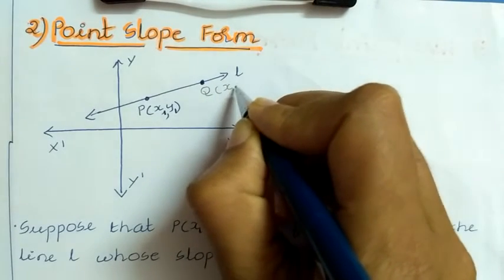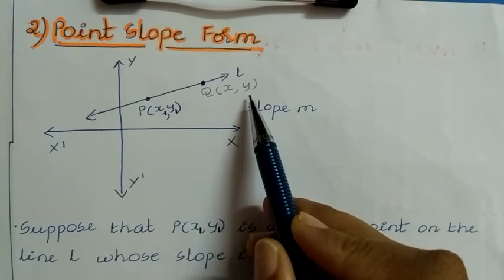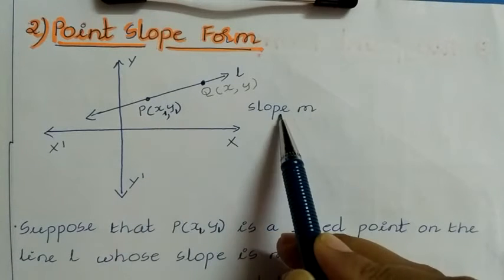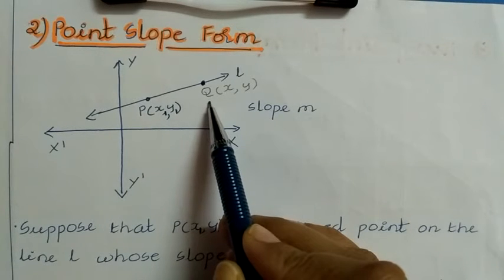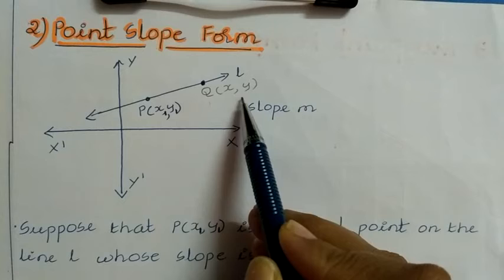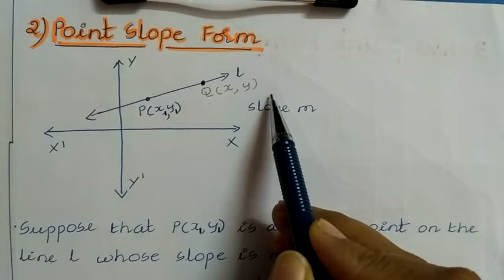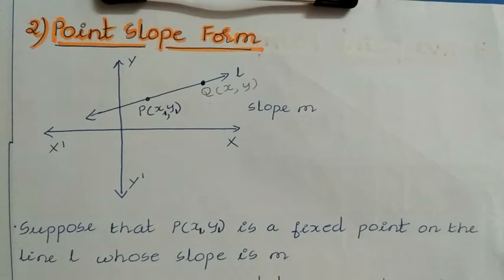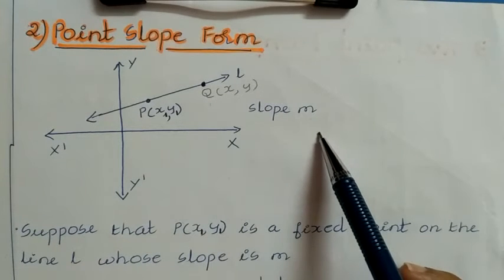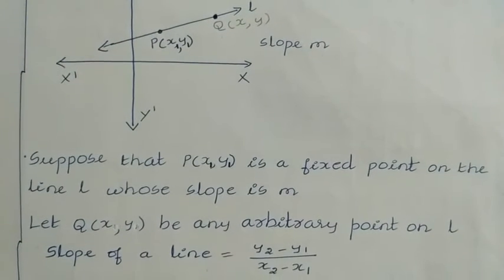Let us consider point Q with coordinates (x, y), where x and y may change. So we know the two given values, and to find the equation of the straight line we take one more arbitrary point Q with coordinates (x, y). To find the slope of a line, we use the formula: (y2 − y1) divided by (x2 − x1).